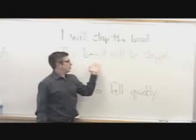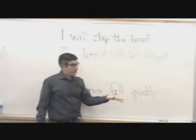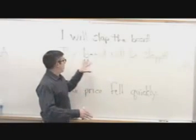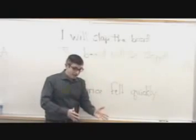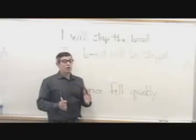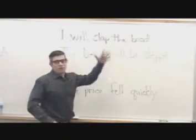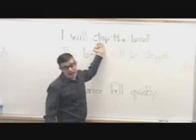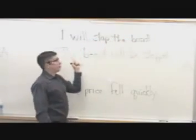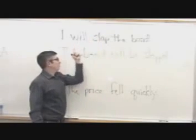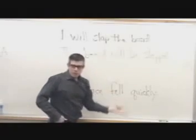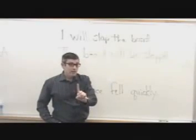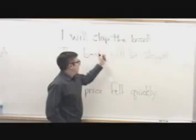Even if I had written 'The board will be slapped by me,' thus including the agent 'I,' you still would not have a situation where the subject and the agent are the same. To sum up: when the subject is the agent, the verb is in the active voice; when the subject is not the agent, the verb is in the passive voice. What happens in this move from active to passive is that the object — 'the board' — becomes the subject. The passive voice of a verb will always be one word longer than the active voice: 'will slap' becomes 'will be slapped,' three words instead of two.